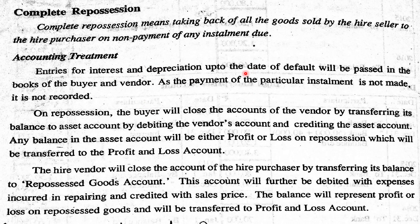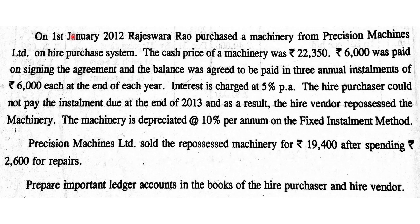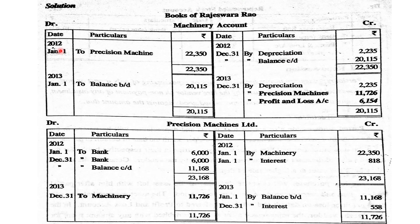Entries for interest and depreciation up to the date of default will be passed in the books of the buyer and vendor. The first purchase is on 1st January 2012. Cash price is ₹22,350. Journal entry: Asset Account Dr. to Hire Vendor Account — ₹22,350. Down payment: Hire Vendor Account Dr. to Bank — ₹6,000, paid on signing the agreement.